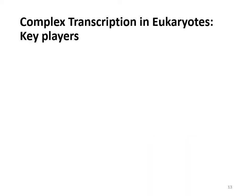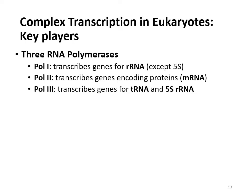Some differences in eukaryotic transcription: eukaryotes have multiple RNA polymerases instead of just one — you don't need to memorize the three exact types, just know that eukaryotes have multiple. Also, eukaryotes do not have a sigma equivalent on their RNA polymerase. In prokaryotes, sigma sees the promoter, binds, and allows RNA polymerase to start transcription. Eukaryotes do not have that.